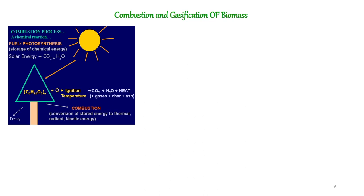Now let us learn the difference between combustion and gasification. In photosynthesis, in the presence of solar radiation with atmospheric carbon dioxide and H₂O, we produce glucose stored in plants. That plant, if ignited for combustion, produces carbon dioxide and H₂O. If we provide sufficient oxygen for complete combustion of all elements in the fuel, it is known as combustion, producing carbon dioxide, water vapour, and heat.